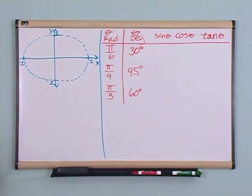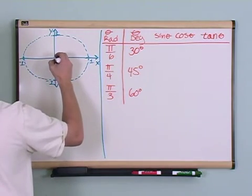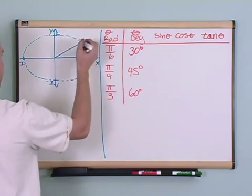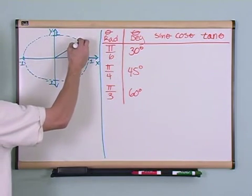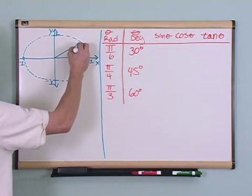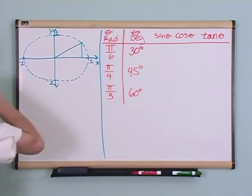All right. The next thing I'm going to do is I'm going to draw a generic triangle in here, like this. And the triangle is going to go up and touch the unit circle here. And then it's going to come down and cross the x-axis.